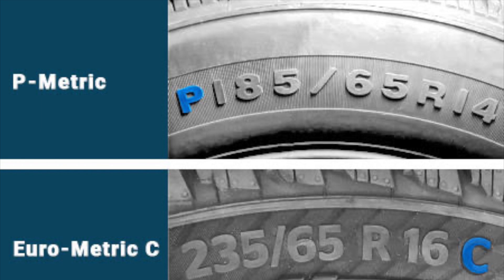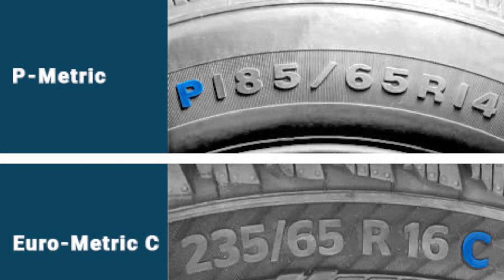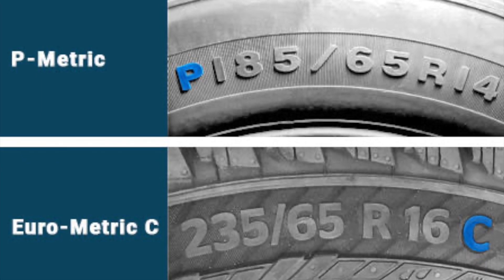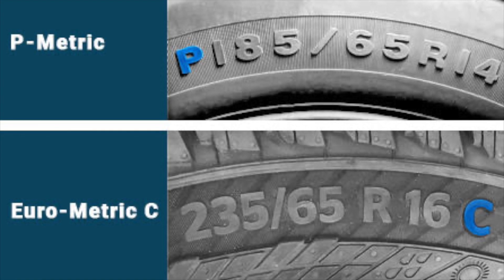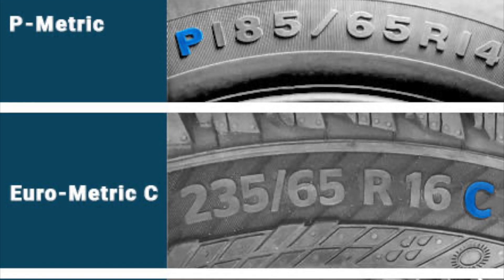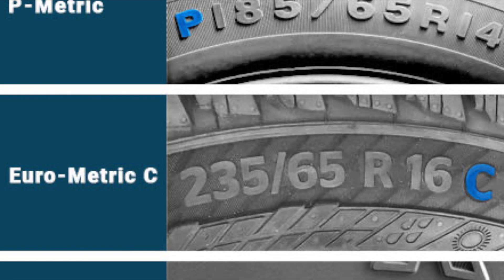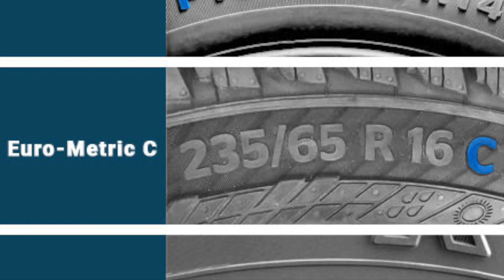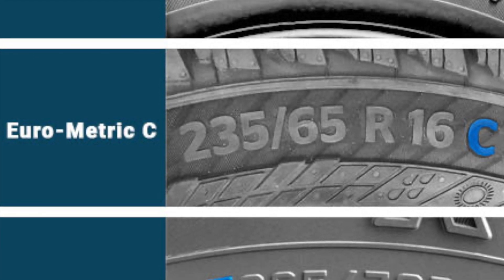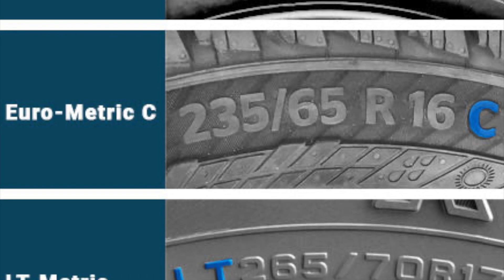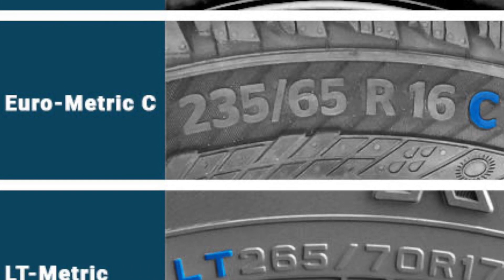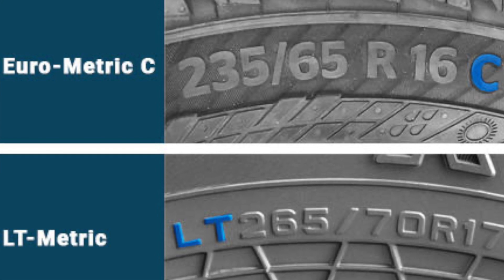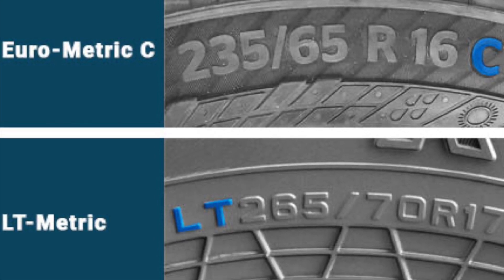While the P-Metric System remains the dominant tire sizing system today, it's worth noting that other sizing systems exist. For example, the P-Metric System and the Light Truck Numeric System are also used in specific regions and applications. However, the principles behind these systems are similar, aiming to provide a standardized way to measure and communicate tire dimensions and performance characteristics.